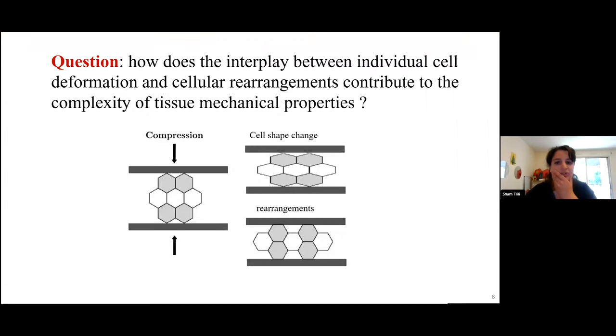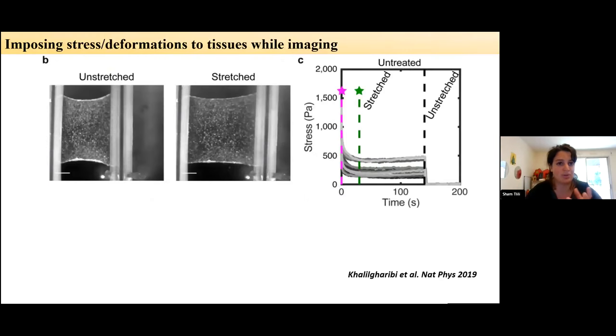So here the motivation of the work I'm presenting is really okay, but can we go further and really understand what's the interplay between individual cell deformation and cell rearrangements, and how these two components contribute to the tissue mechanical properties. Because if you compress a tissue, you can have the cells that just deform like an elastic, or rearrange like a grain of salt, and you have all sorts of behavior intermediates.